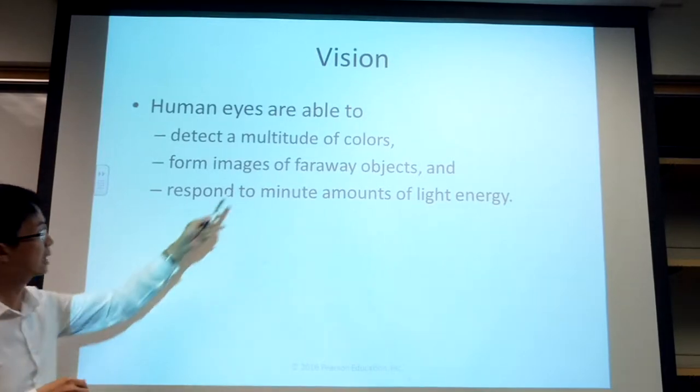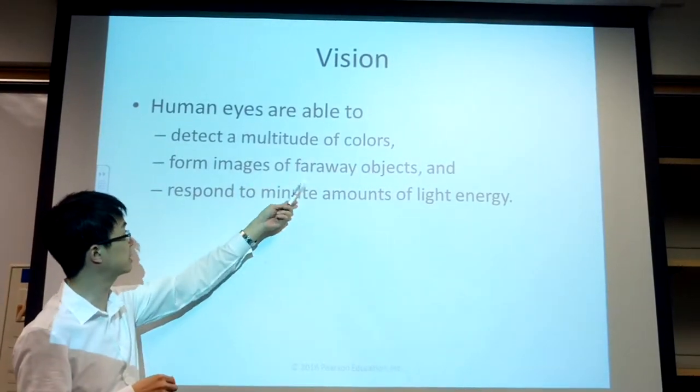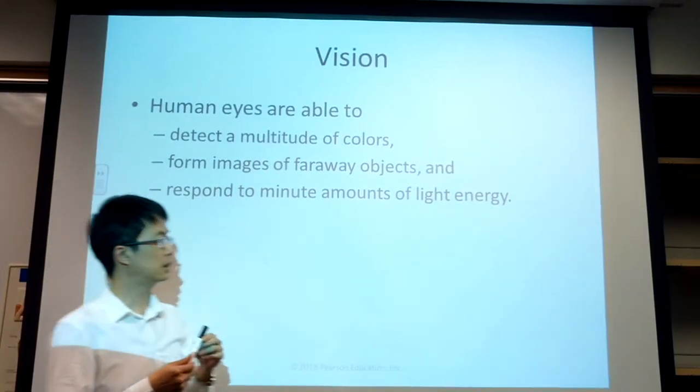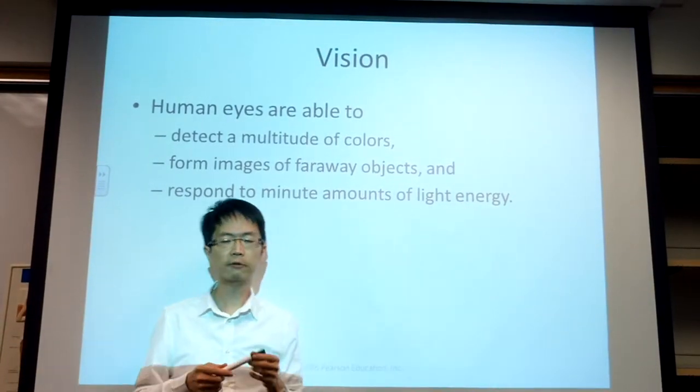Our vision can detect colors, it can detect distance, and it depends on light energy. We are daytime animals, so we rely on strong sunlight so that we can see.